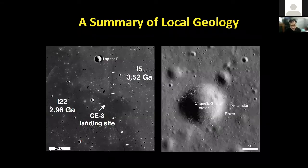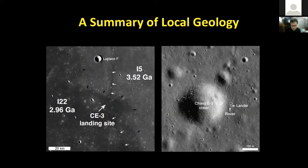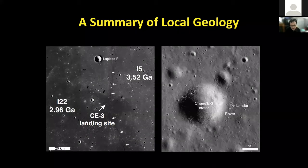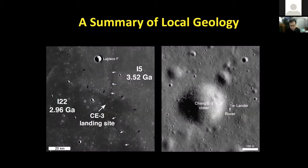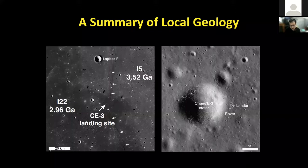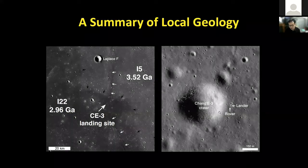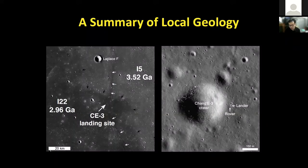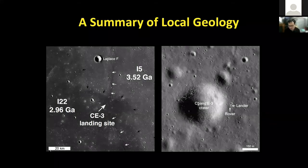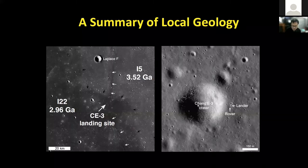Here is a short summary of the geology of the Chang'e 3 landing site. The Chang'e 3 landing site is within a geologic unit of 2.9 billion years old. The surface regolith thickness is about eight meters. The landing site is very close to the east rim of a young, fresh impact crater with an age of about 100 million years old. This is the local geology, and our ground-penetration radar interpretation will depend on this local geology.